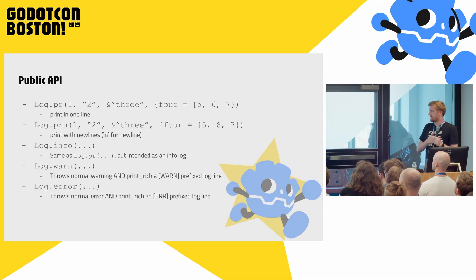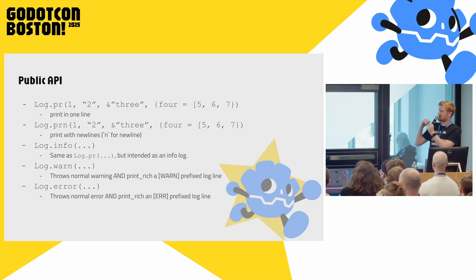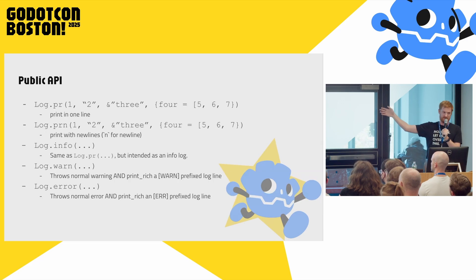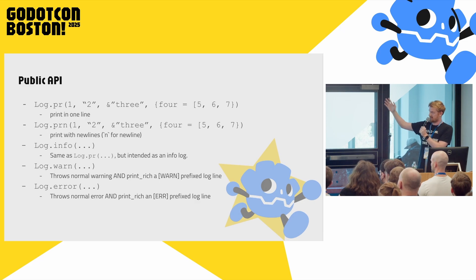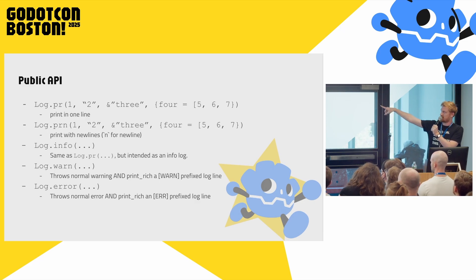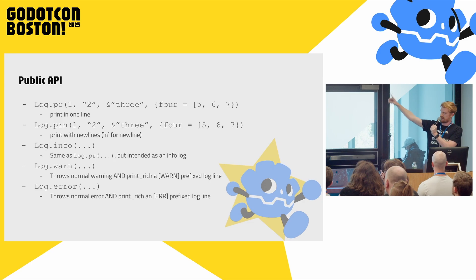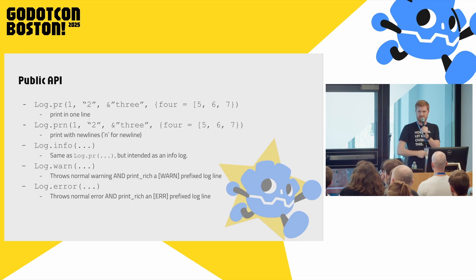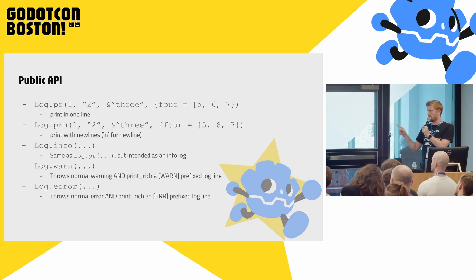Here's the public API. It's variadic — it can have any number of arguments, though technically it can only have seven; if you need more, you can just pass an array. At the top, logPR — I'd use this instead of print everywhere. If you want a new line, use logPRN; the N stands for new line. Info is like a print I won't delete — just a persistent dev log. And then warn and error will print and colorize, but will also throw a warning or error, so you get it in both spots — the best of both worlds.